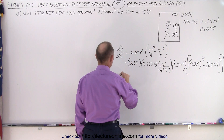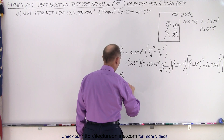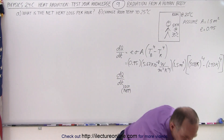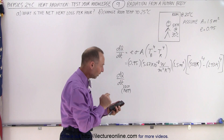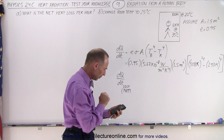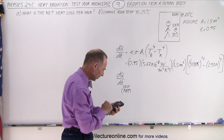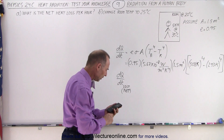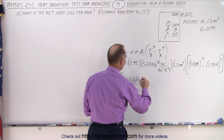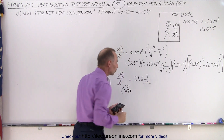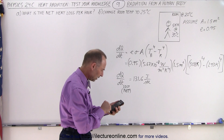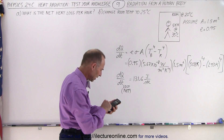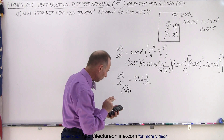So the dQ/dt — the amount of heat lost, in this case the net loss — let's see what we get. Starting with the temperatures: 308 squared squared, minus 293 squared squared, that's to the fourth power. Then multiply by 1.5, multiply by 5.67E-8, and times 0.95. That gives us 131.6. So this is equal to 131.6 watts, or joules per second.